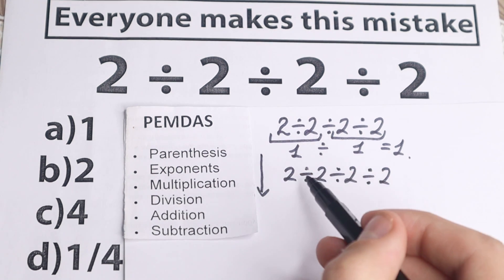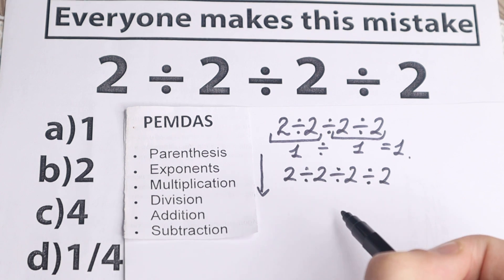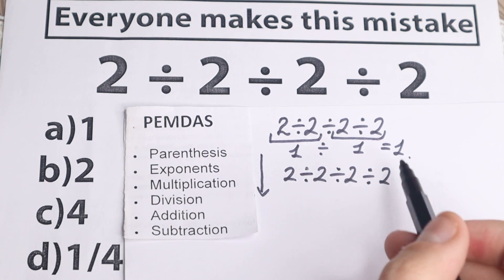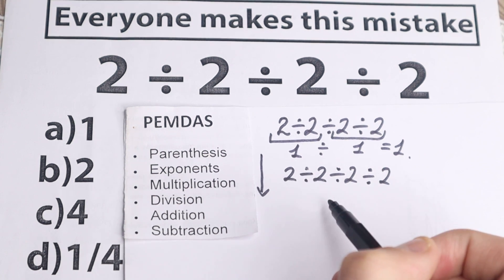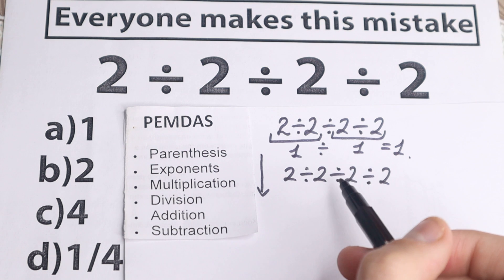So the first step is parenthesis, so are there any parenthesis right here? No, I don't see any of those, we don't have any parenthesis. What about the next step? Exponents, so are there any squares, cubes right here? No, I don't see any of those, so we don't have any exponent.